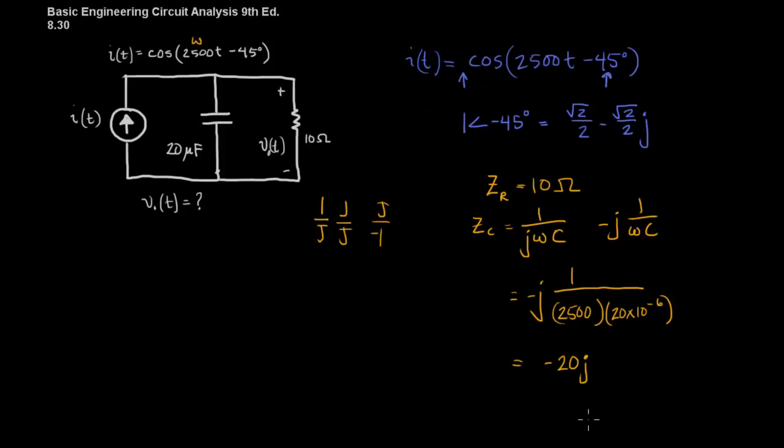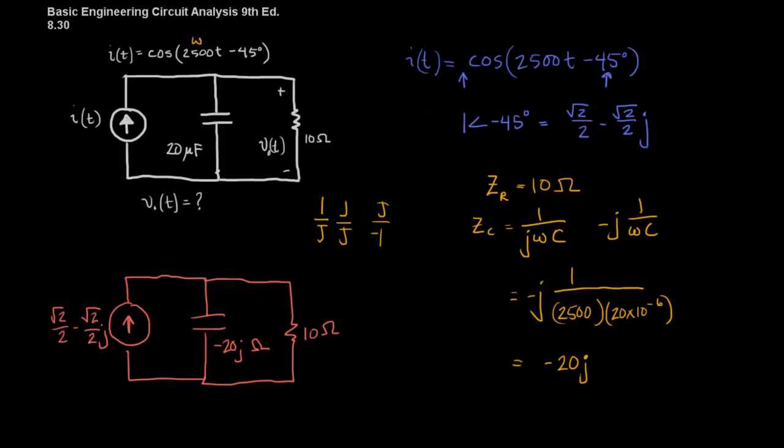Okay, so now we have our impedances, and we have our phasor, so we can redraw the circuit in the frequency domain. So, I'll redraw it here. This is the square root of 2 over 2, minus the square root of 2 over 2 j. This is minus 20 j. And this is 10 ohms. Remember that this is also in ohms. So, now we have a really simple linear circuit, and we can use any method at all.